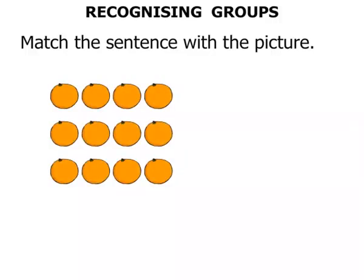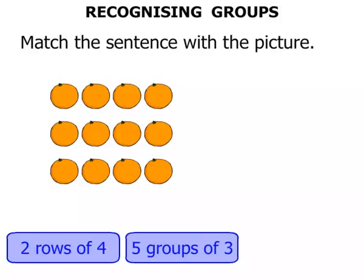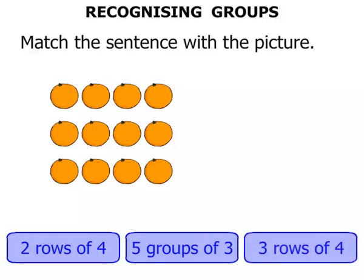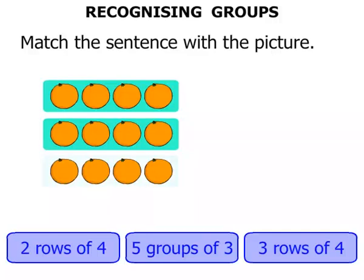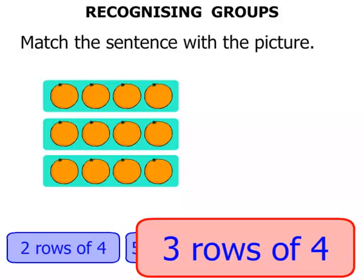Lots of oranges here. Do we have two rows of four, or five groups of three, or three rows of four? I wonder what we've got. Well, let's see — that's one row, that's two rows, and that's three rows. Three rows. How many in each row? One, two, three, four. Four in each row. So we've got three rows of four.